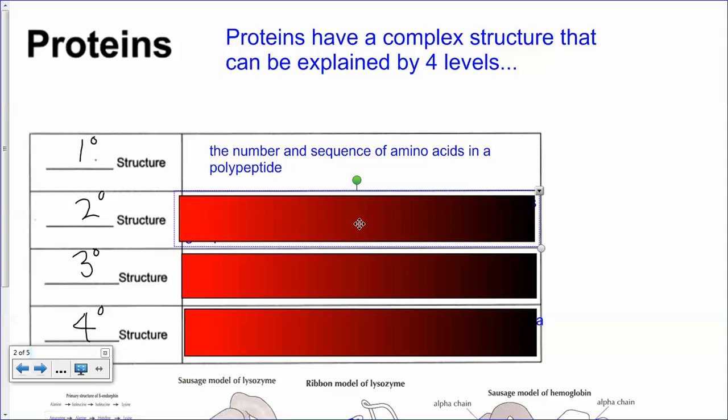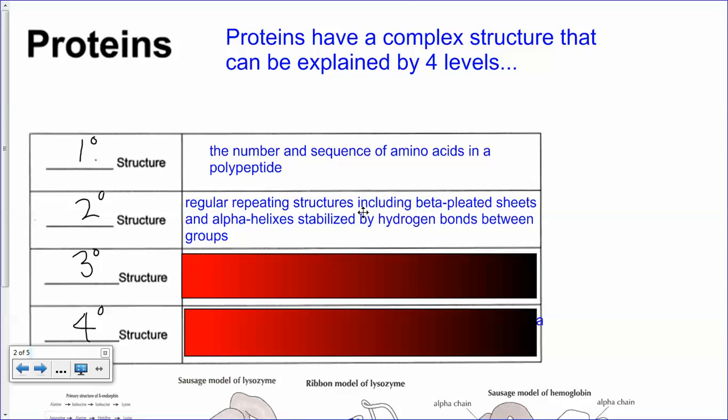The secondary structure is how this one chain then kind of mini-folds, does mini-folding. The mini-folding can either be alpha helixes - where that one chain kind of spirals like this - or beta pleated sheets, where the chain can be folded into sheets like this. We're going to see this in the next video as well.